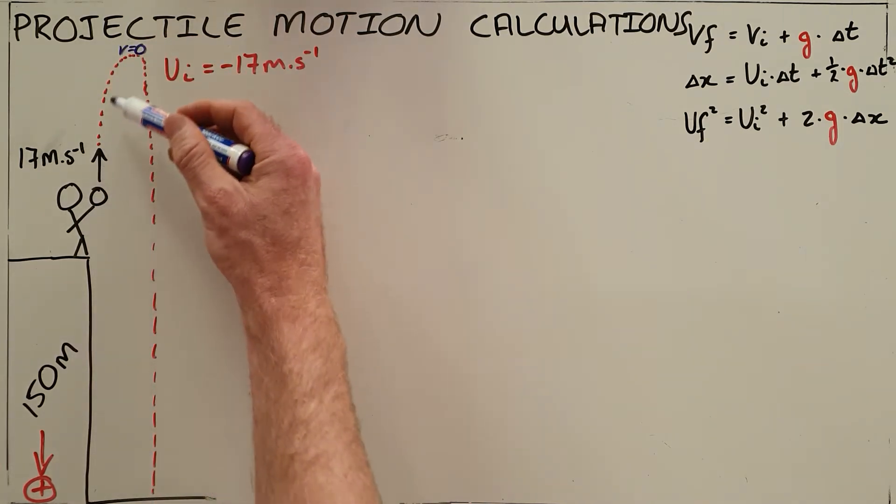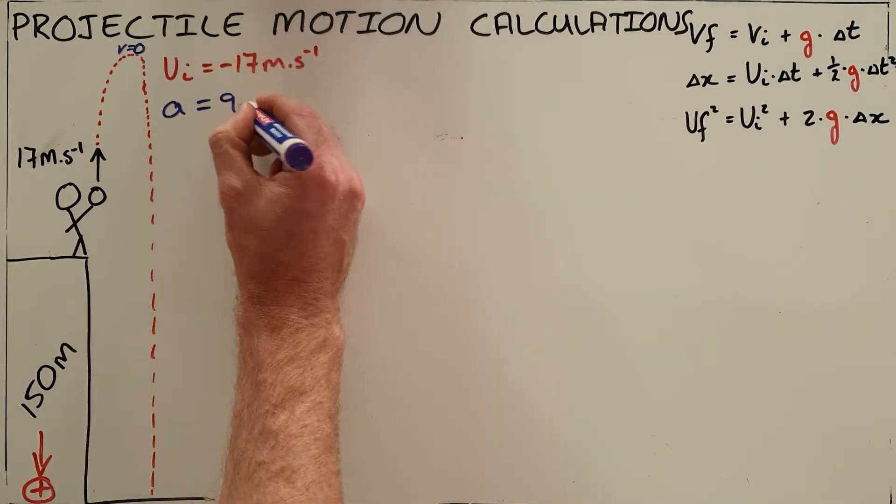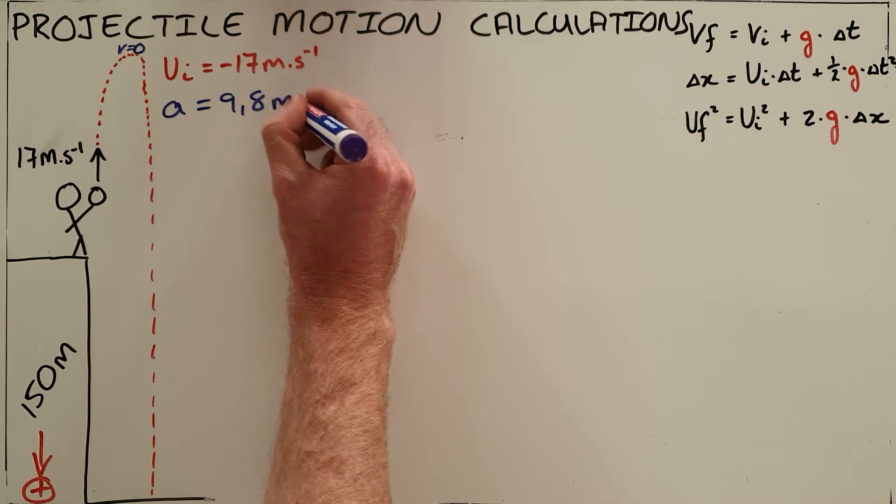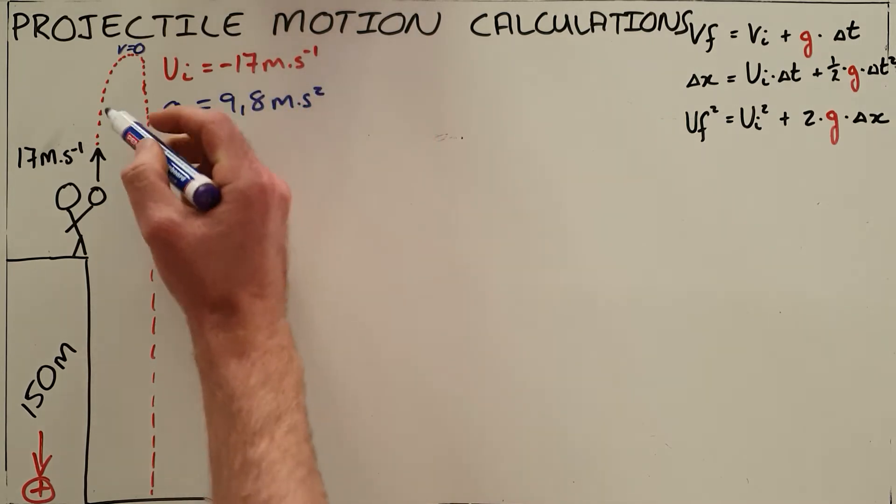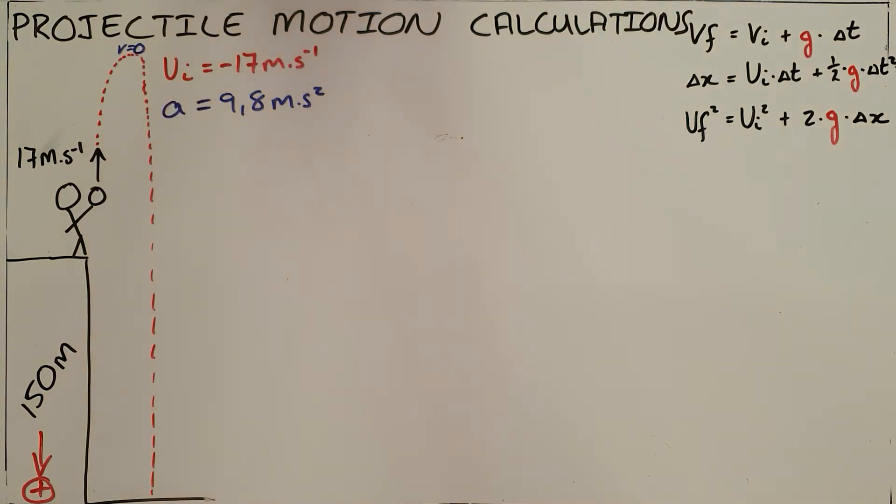We know that as it travels upward, its acceleration is constant. We know the acceleration is a constant of 9.8 meters per second per second downward, but the velocity is constantly decreasing until it reaches that maximum height.